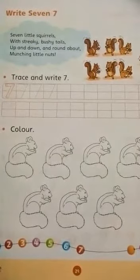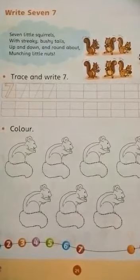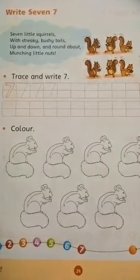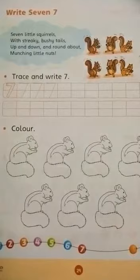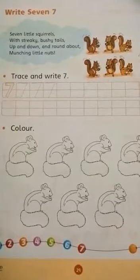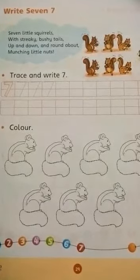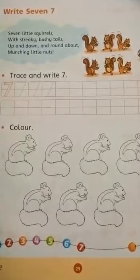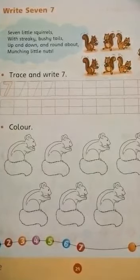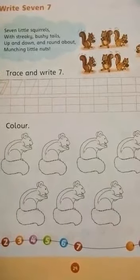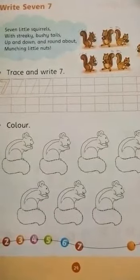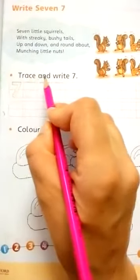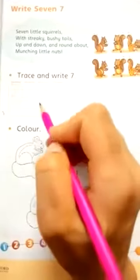Now let's start writing number 7. First you will trace the dots to write number 7. Then you will write number 7 by yourself. Try to write it by yourself. So let's trace the dots. Trace and write 7.